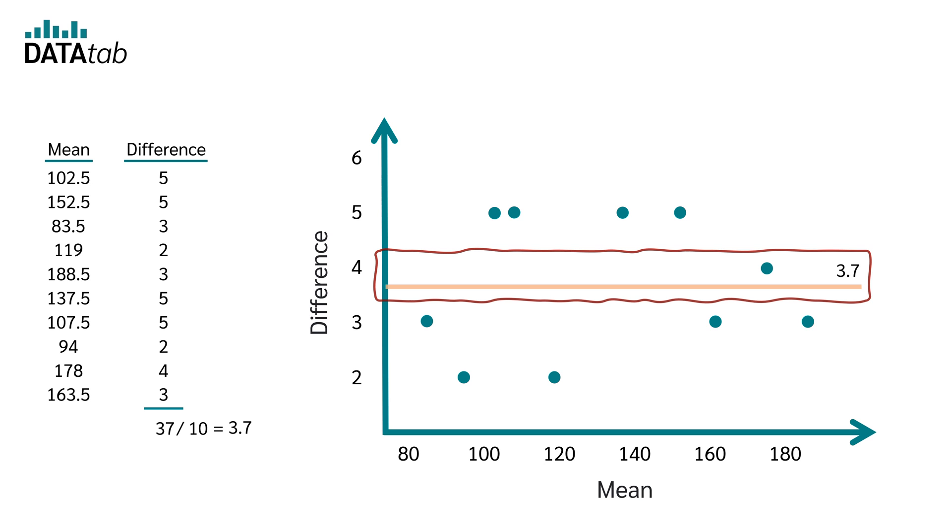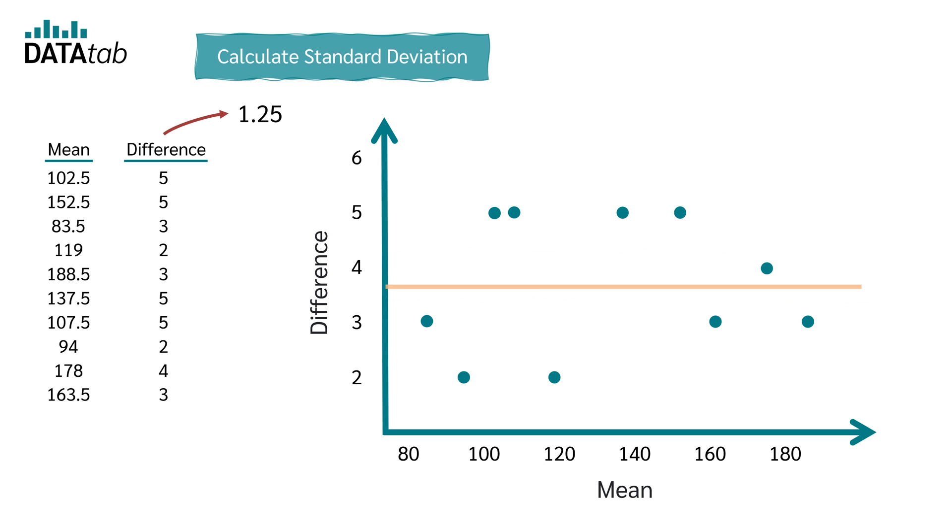On average, rater 1 measures 3.7 more than rater 2. Next, we can calculate the standard deviation of the differences. The standard deviation results in 1.25.